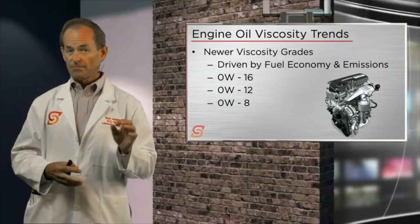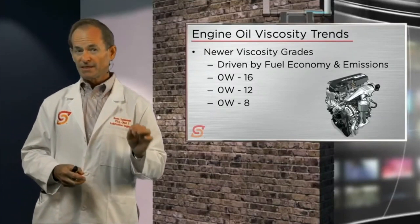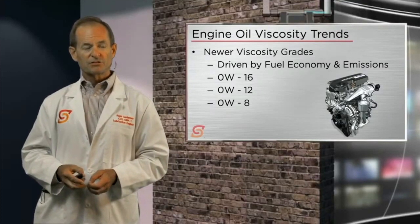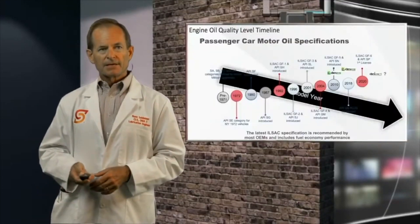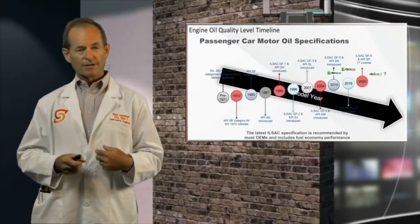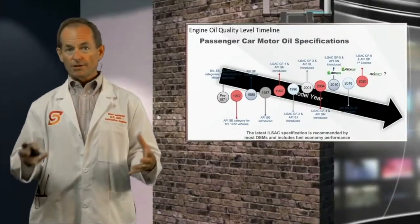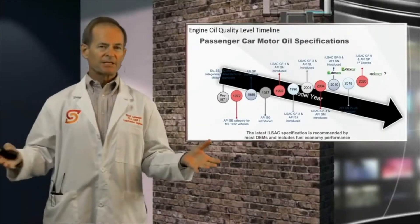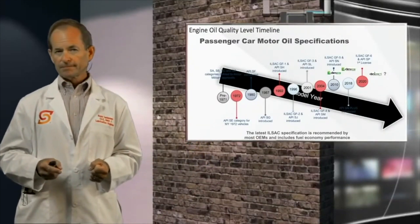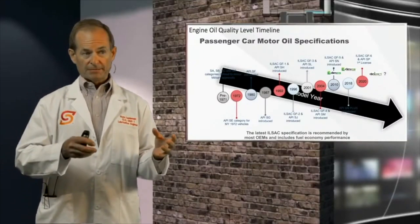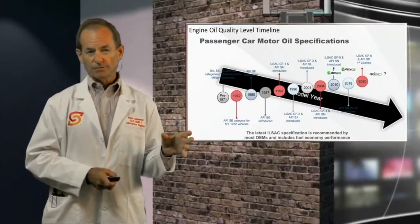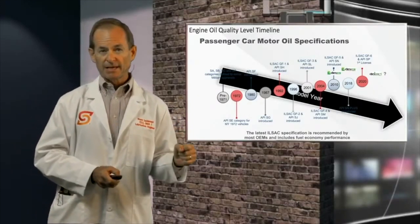Here's a history timeline on engine oil quality based on these service classifications. We're currently at — or have been up until May 1 — API service level SN Plus.